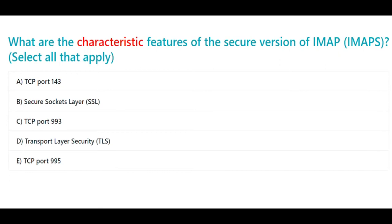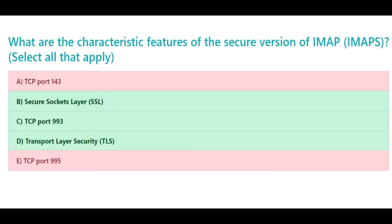What are the characteristic features of the secure version of IMAP, IMAPs? Select all that apply: a. TCP port 143, b. Secure Sockets Layer (SSL), c. TCP port 993, d. Transport Layer Security (TLS), e. TCP port 995. The correct answers are b. Secure Sockets Layer, c. TCP port 993, and d. Transport Layer Security.